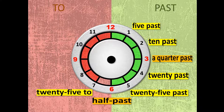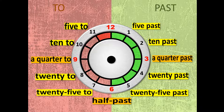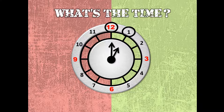Now let's move to the right hand side of the clock. Number 7 stands for '25 to,' so we use the word 'to' — not 'past' anymore. Number 8 is '20 to,' number 9 is 'a quarter to,' number 10 is '10 to,' number 11 is '5 to,' and number 12 — if the long hand strikes at 12, you say 'o'clock.'